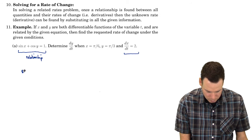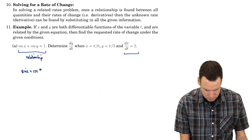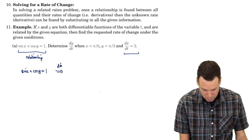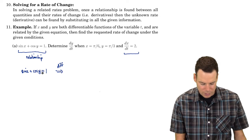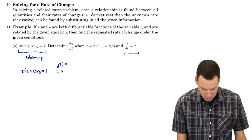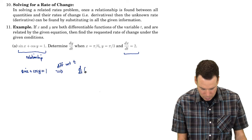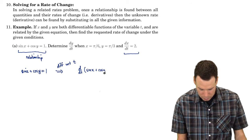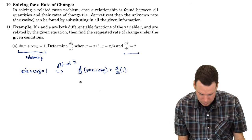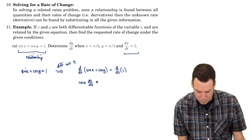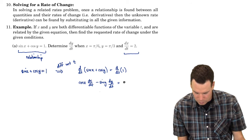What we do is start with this relationship and differentiate it. When we differentiate it, we get a relationship between their derivatives. We differentiate with respect to t, so d/dt of the left equals d/dt of the right. The derivative of sine of x is cos(x) · dx/dt, the derivative of cos(y) is negative sine(y) · dy/dt, and the derivative of the constant is zero.